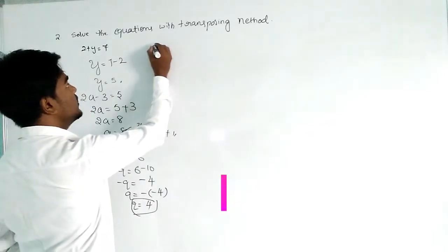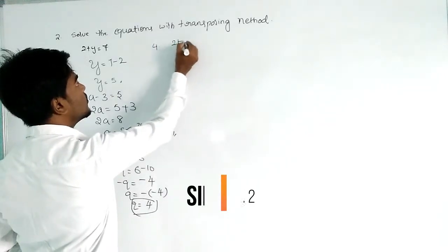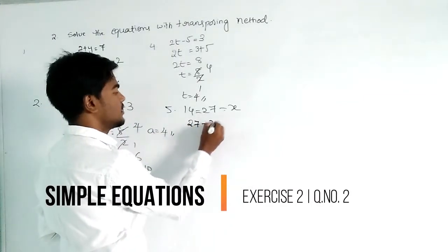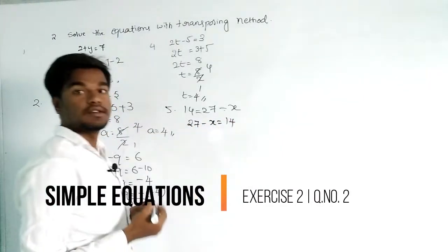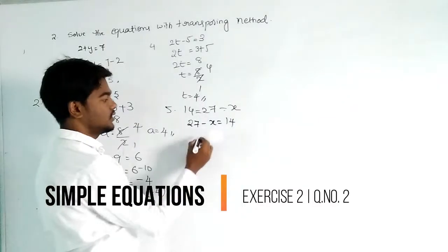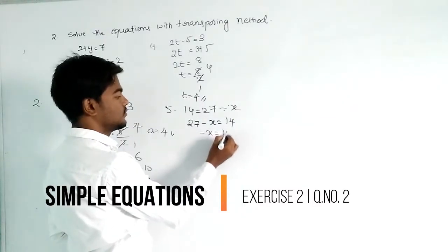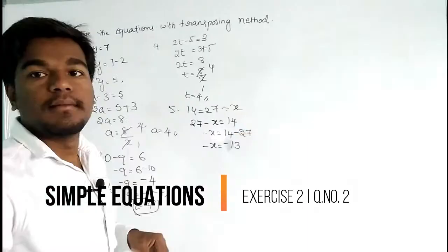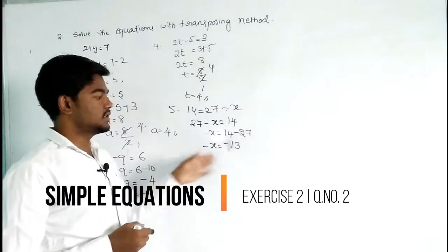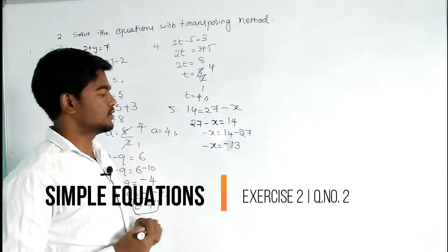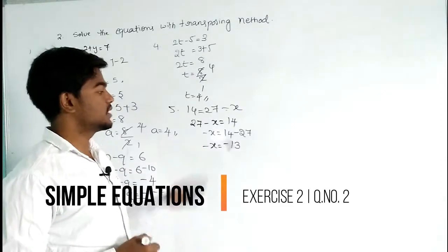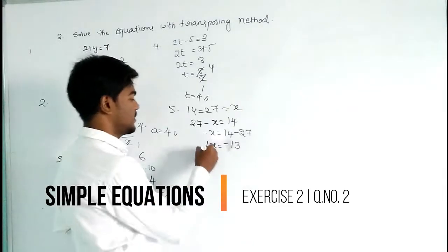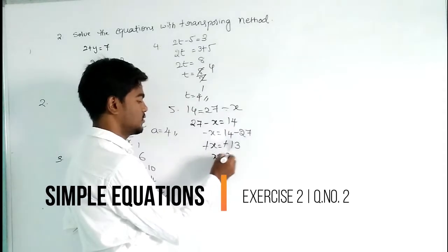Our next question: 7 - x = 14. So minus x = 14 - 7, giving minus x = 7. We cancel the minus on both sides, so x = 7.